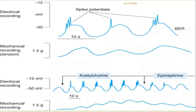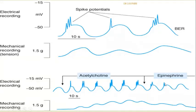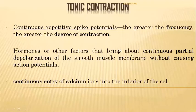When acetylcholine is added it increases the frequency of spike potentials and muscle contractions increase. When epinephrine is added the frequency of spike potentials reduces and muscle relaxation occurs. After spike potentials appear the muscle contracts; when they cease the muscle relaxes. The greater the frequency of continuous repetitive spike potentials, the greater the degree of contraction.